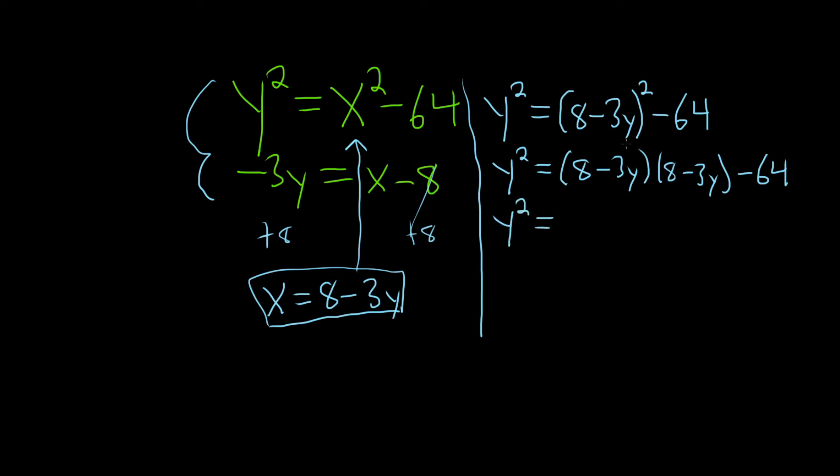So y squared equals, so we'll take this 8 and multiply it by both of these, and then take this minus 3y and multiply it by both of these. So 8 times 8 is 64. And then 8 times minus 3y is minus 24y. This times this is minus 24y. And this times this is going to give us 9y squared. And we still have the minus 64.